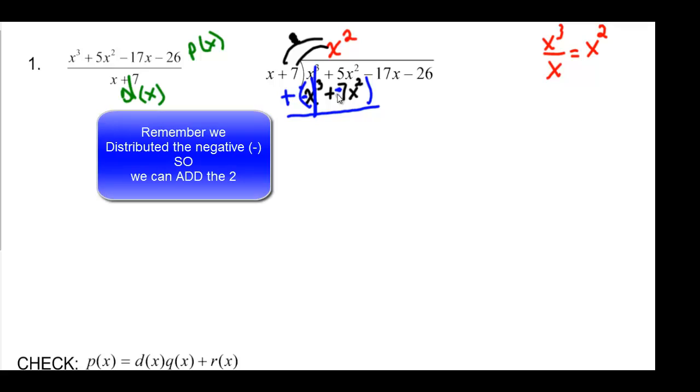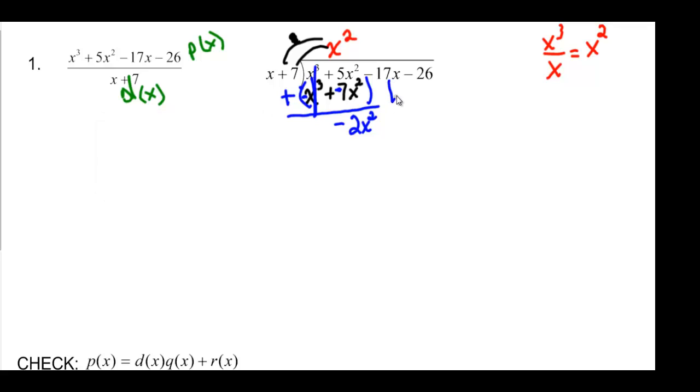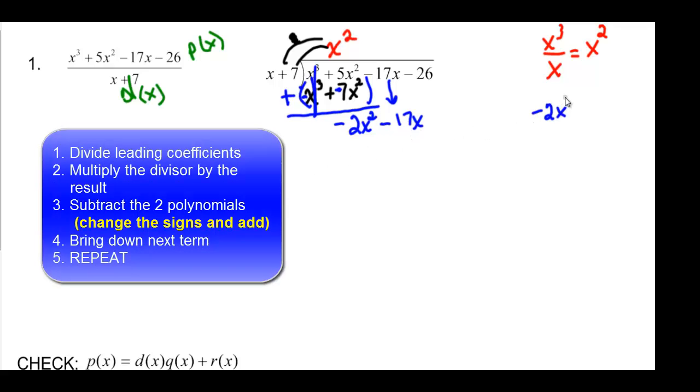And 5X squared minus 7X squared gives me a negative 2X squared. And just like in long division with numbers, you bring your next term down. So minus 17X and we do it again. We say negative 2X squared divided by my X. Now what do I need to multiply by? I have my negative 2. The X on the bottom cancels 1 on the top.